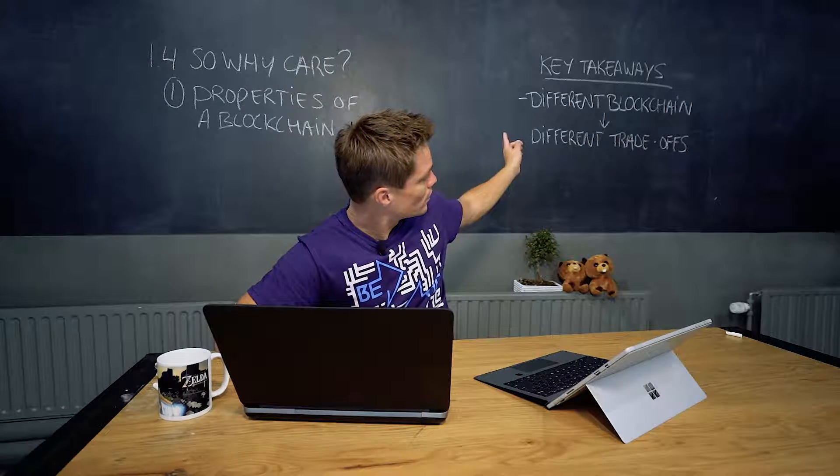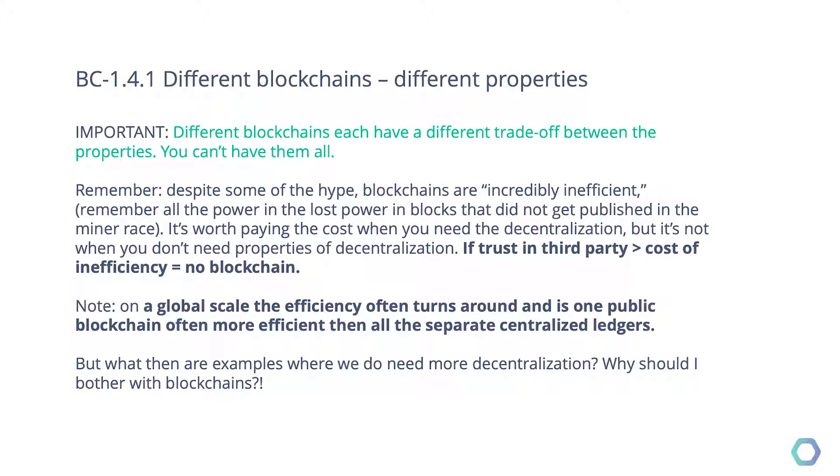Bottom line: different blockchains, different trade-offs, different properties, different use cases. There is no all-encompassing blockchain that tackles everything. In the case of Bitcoin, it's very good for sound money and security. In the case of Ethereum, it's very good for new forms of governance and flexibility. Just like a shark and a lion are not competing, Bitcoin and Ethereum are not competing — different use cases. Keep that in mind.